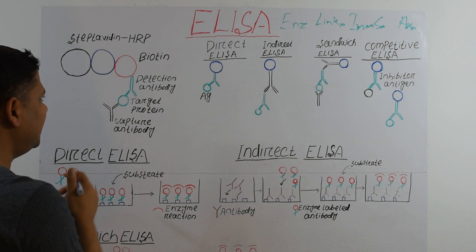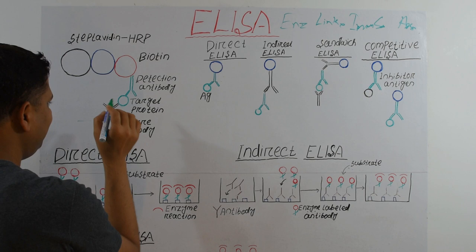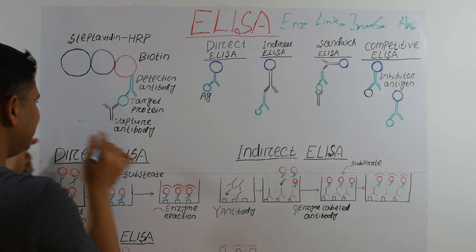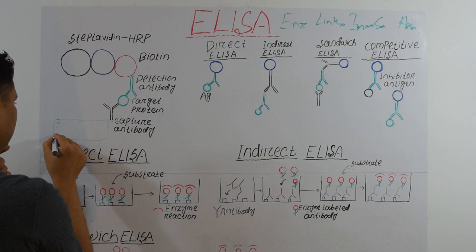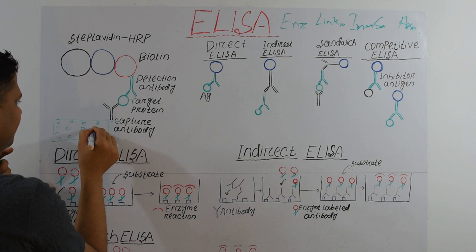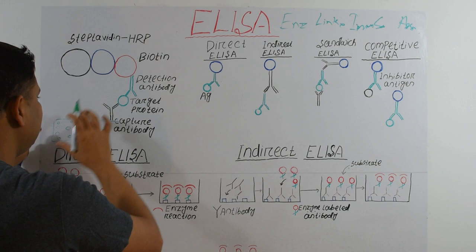The first element is the primary antibody, which is fixed to a surface. For ELISA we use a multiwell plate — usually 96 or 48 wells — and to each well an antibody is fixed to the surface.